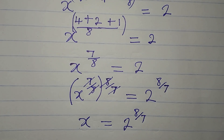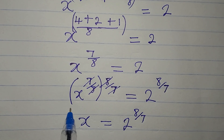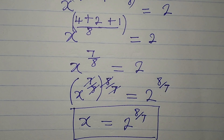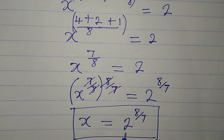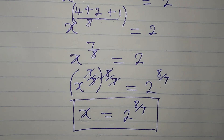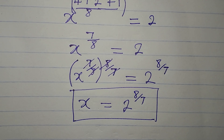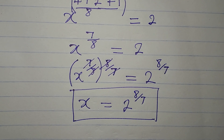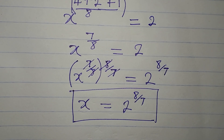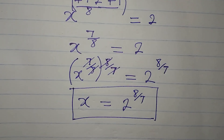If you recall what we got from the first method, we got the same answer: 2 to the power of 8 over 7. Thank you for watching. If you were to solve this, which of the methods would you have used — the first or the second?